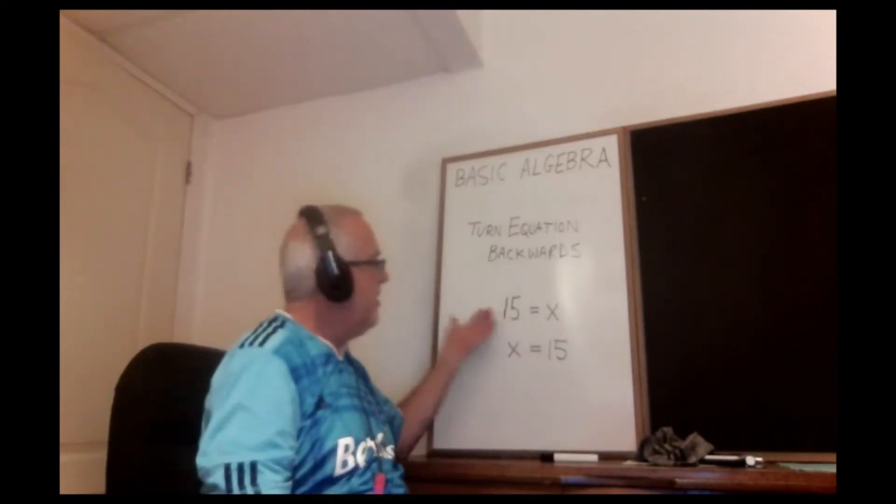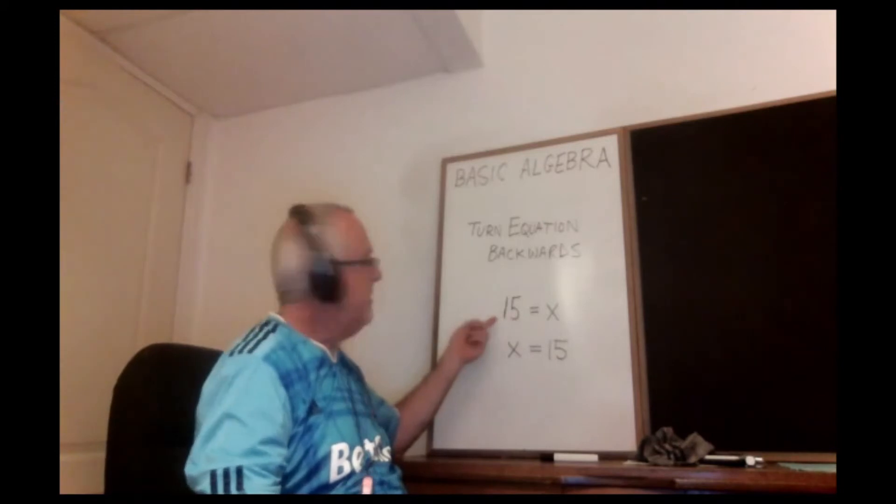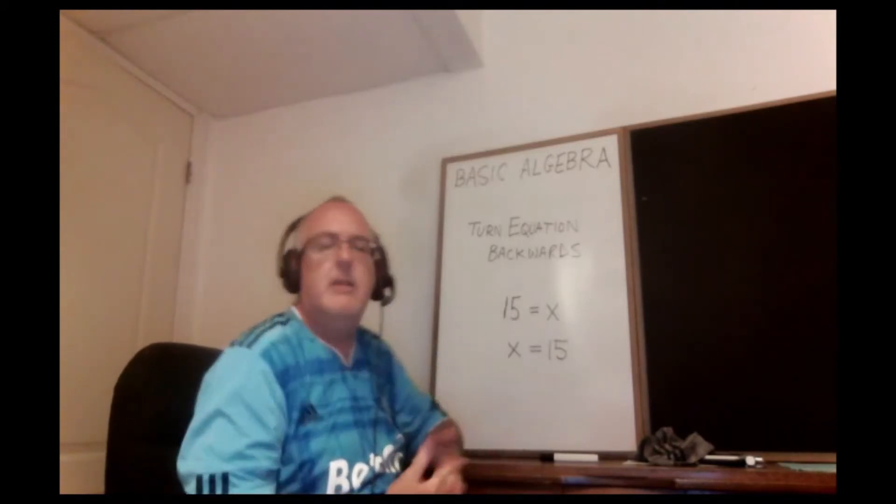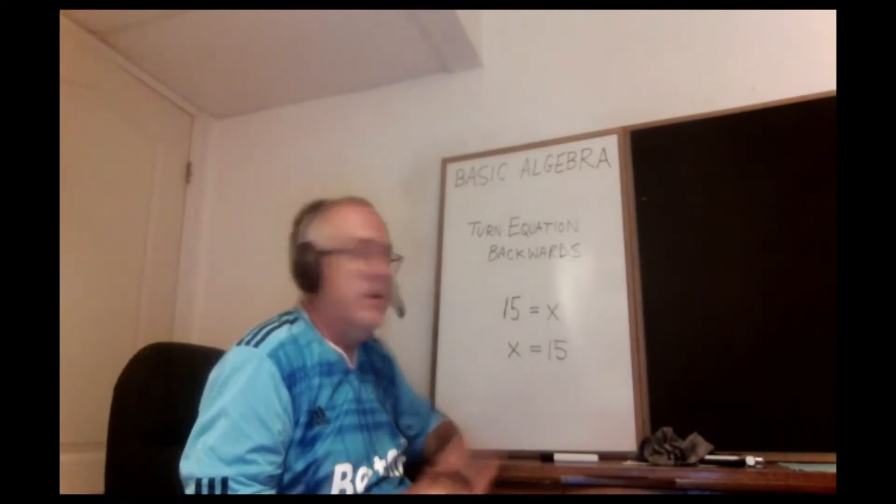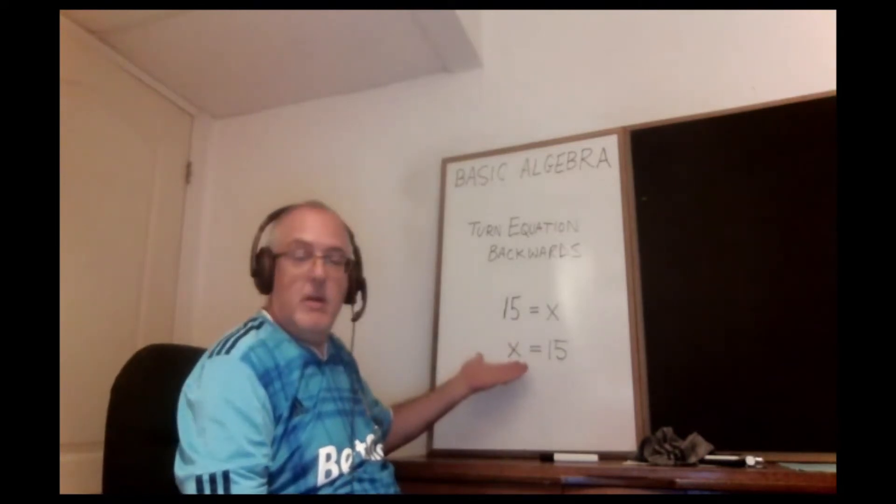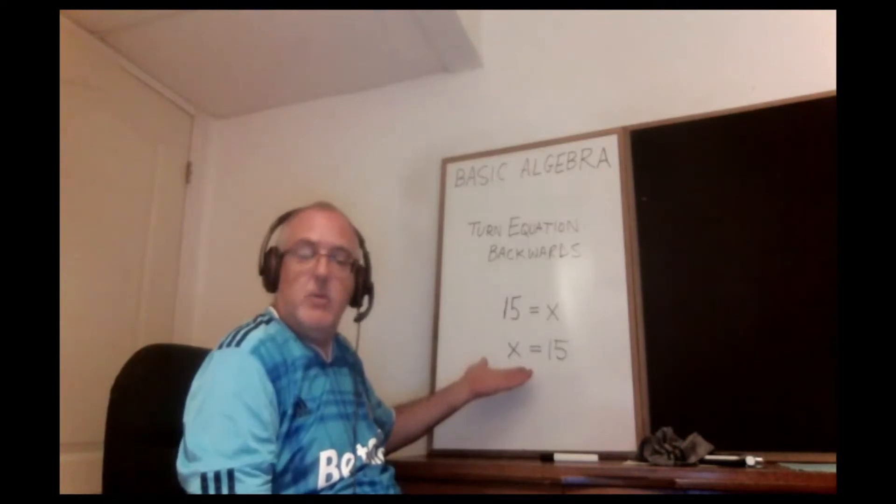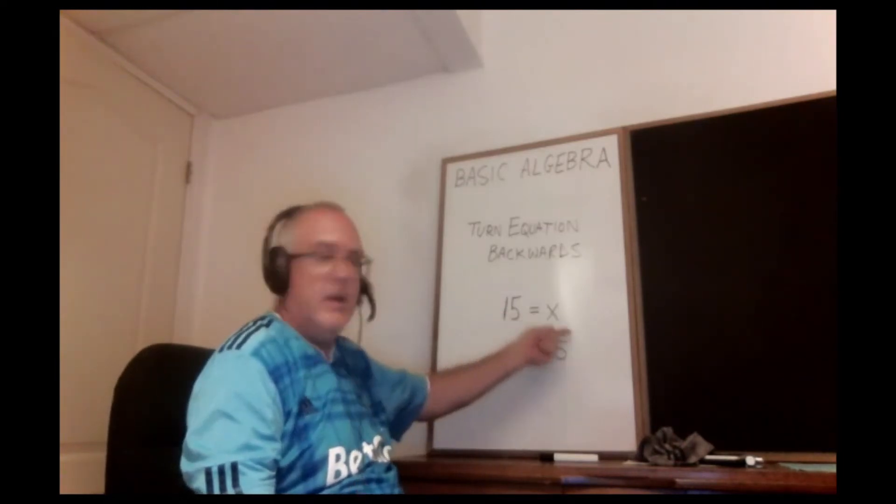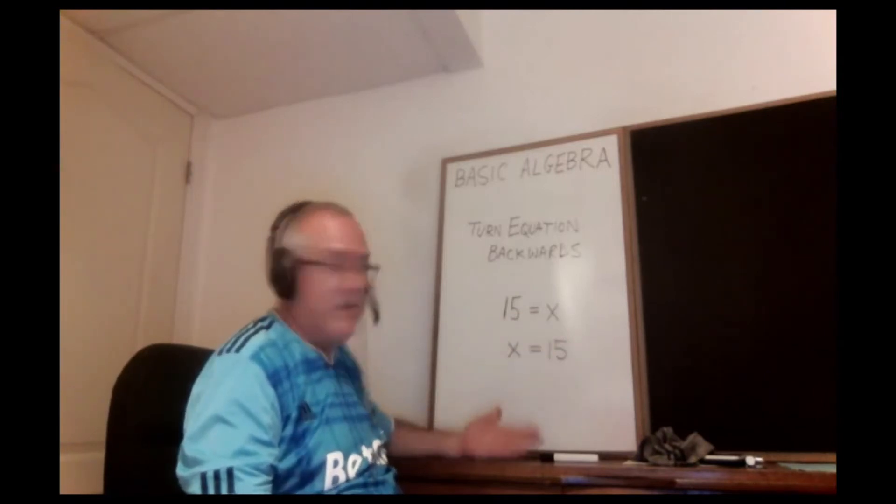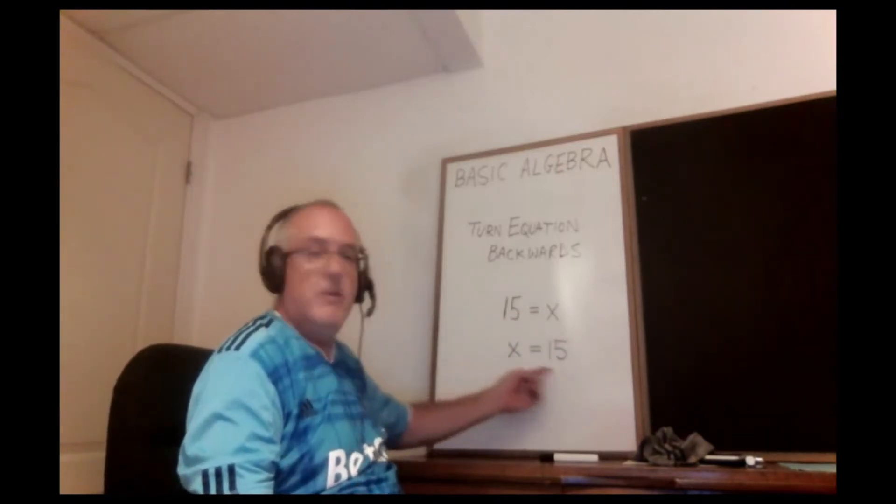Think about it in terms of the English language: 15 equals x could be said 15 is the same as x. If they're the same, then it doesn't matter which one's on the left, which one's on the right. You can see that 15 is the same as x means the same thing as x is the same as 15.